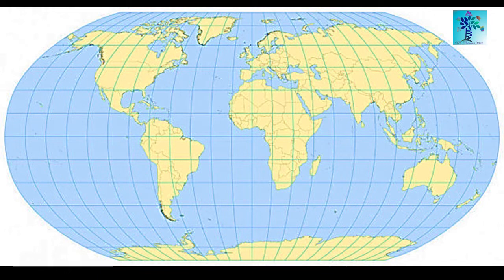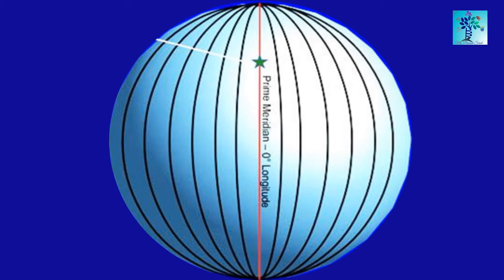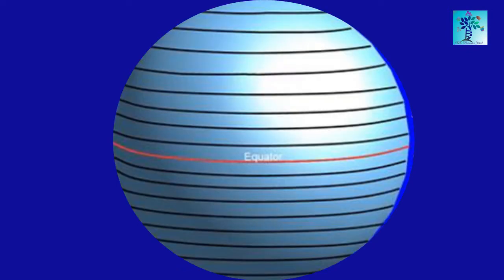Let us first have a look at these horizontal and vertical lines drawn on the globe or a map. The vertical lines drawn on a map or a globe are called meridians or longitudes. The horizontal lines drawn are called parallels or latitudes.